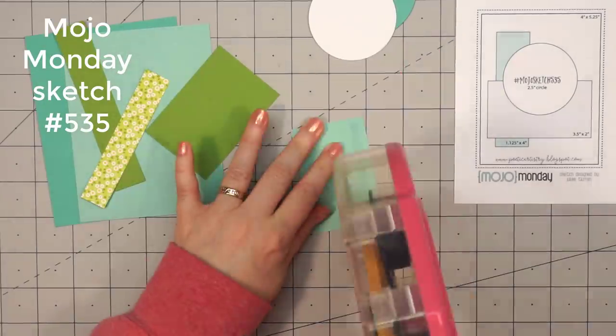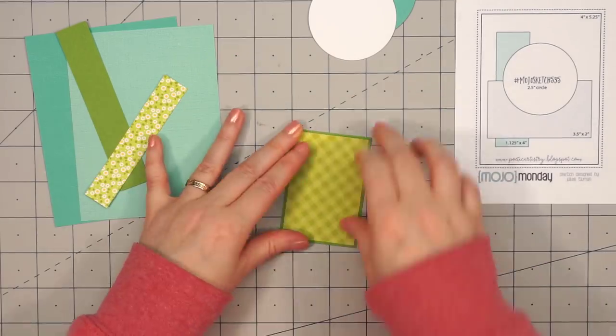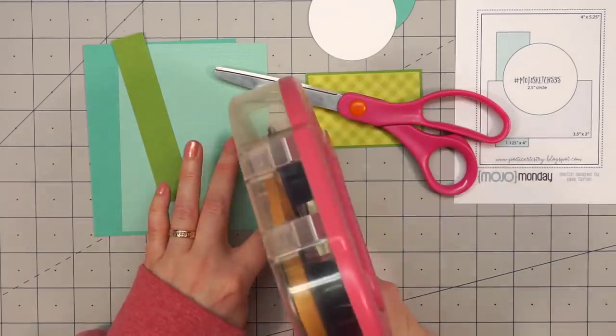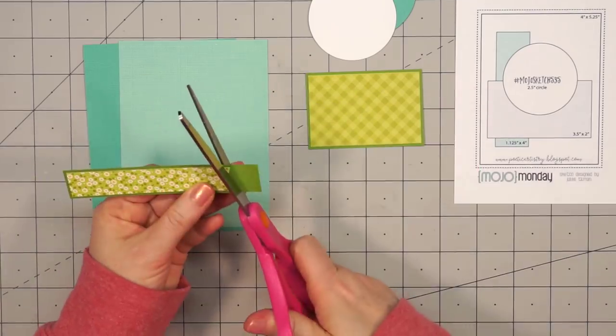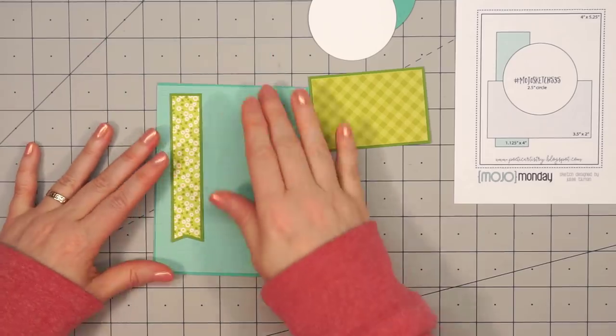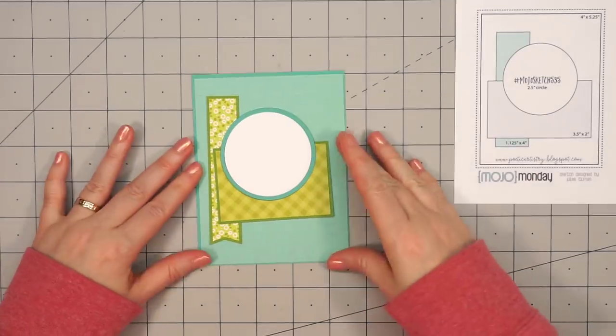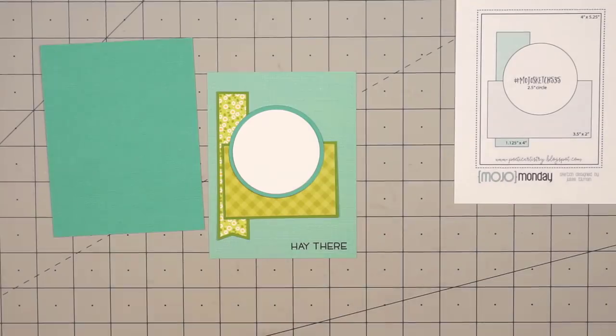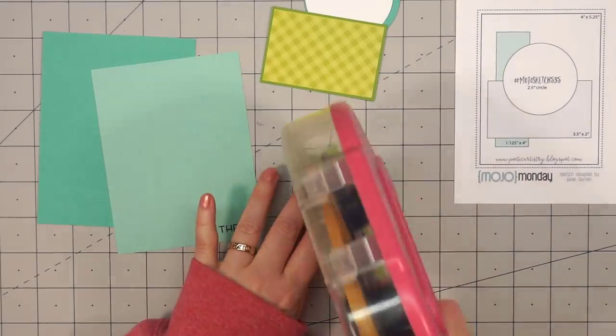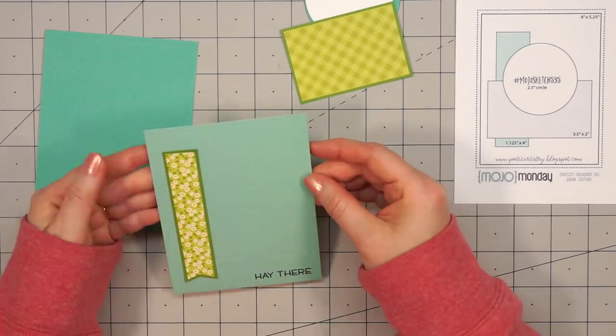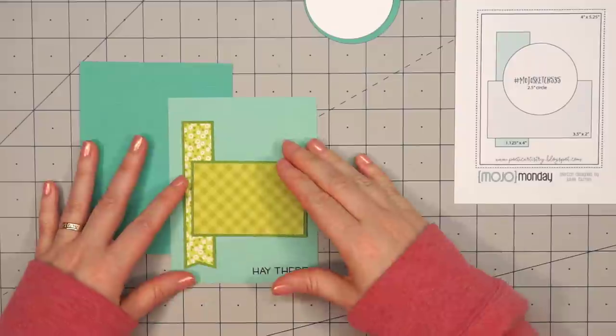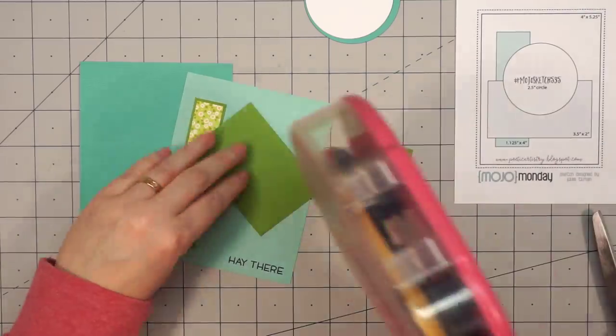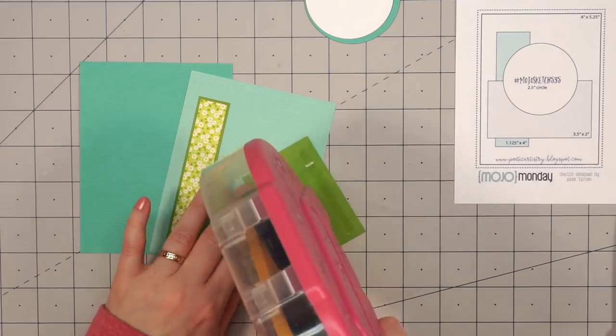Moving on to the third and final card, this is Mojo Monday sketch number 535. Both of the smaller pattern paper pieces are that half inch shorter than the measurements on the sketch, but this still will come together fine. I did cut a fishtail in the bottom of that narrow strip, layered all of these pieces in some cardstock, and then I'm going to stamp the sentiment in the lower right hand corner. This is Hay There. Then I'll start attaching some pieces. I'm going to put the little banner piece on first, and then this green plaid paper will go on next. I'll put some scrap cardstock under the right hand side of it, keeping it all nice and even.